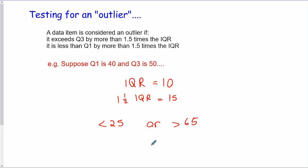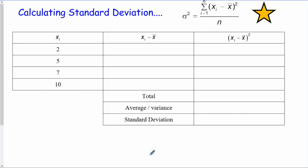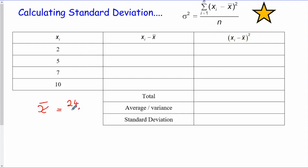We need to be good at calculating standard deviation — there are two ways: understanding how the formula works, and using a calculator. The variance formula says: for every item, take away the mean, square the result, add all of them up, and divide by how many there are — essentially finding an average of the squared differences. The first step is finding the mean. For example with the numbers 2, 5, 7, and 10: the sum is 24, so the mean is 24 divided by 4, or 6.